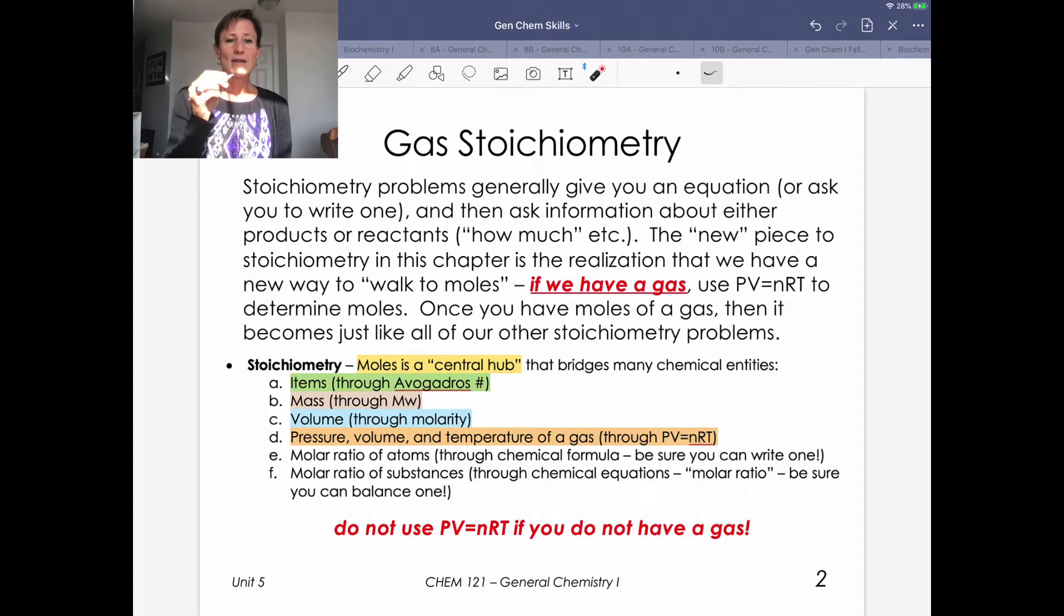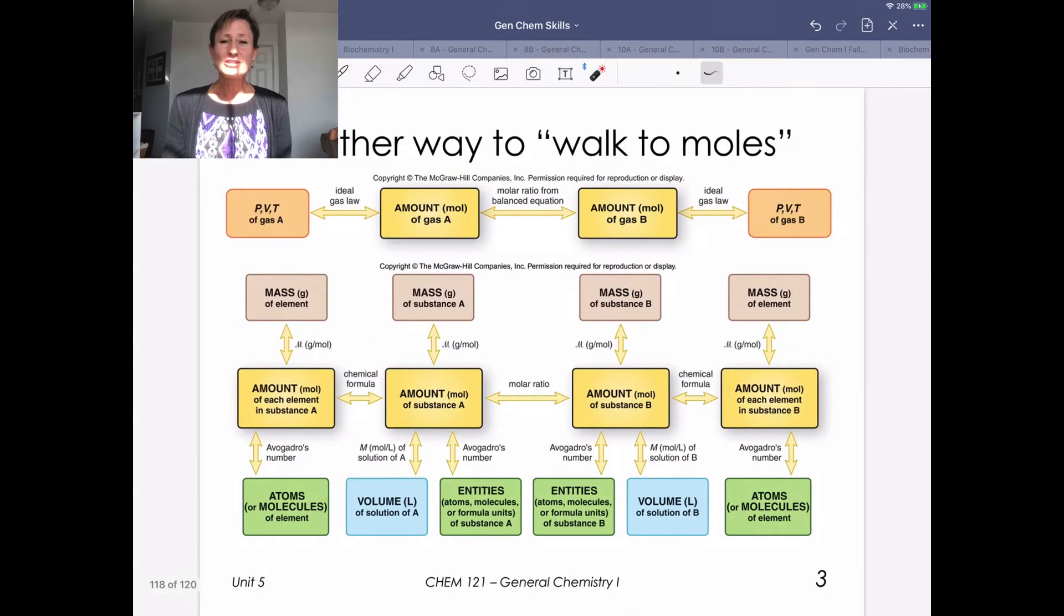If we know, for example, the mass and the density of a gas or of a substance, we can get to volume. So density is another one of these pieces. So this really is sort of our game board, if you will.